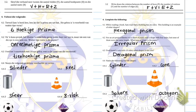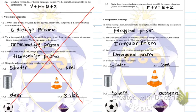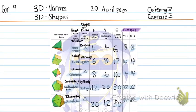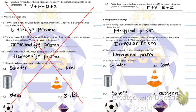Next we have a few questions. Ignore the Afrikaans on the left. Question 3.2 asks: write down the relation between the number of faces, the number of vertices, and the number of edges. What do we see? The two columns are equal. So I can write: faces plus vertices is equal to edges plus two. That is Euler's law.